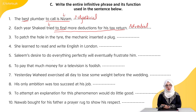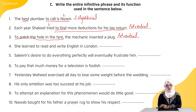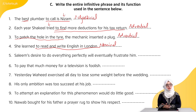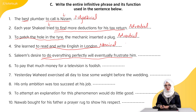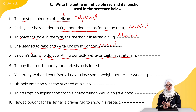Third: 'To patch the hole in the tire, the mechanic inserted a plug.' 'To patch the hole in the tire' yeh infinitive phrase hai — again it will be adverbial. Fourth: 'She learned to read and write English in London.' Yahan nominal hoga — infinitive is acting as a noun. She learned what in London? To read and write English — so this is nominal. Fifth: 'Salim's desire to do everything perfectly will eventually frustrate him.' 'To do everything perfectly' — yeh infinitive phrase hai. 'Desire' jo hai noun hai, aur yeh describe kar raha hai ki kaisi desire — so it is acting as an adjective.